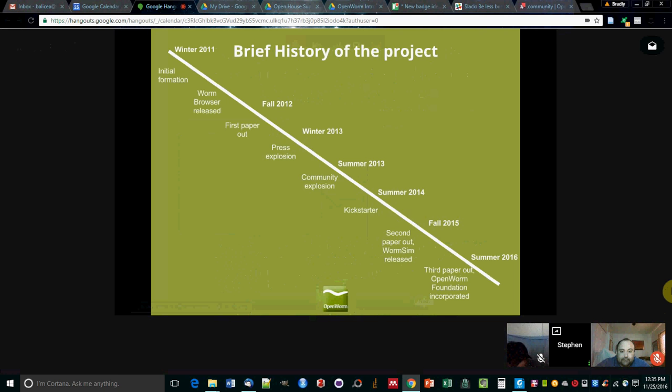People started blogging about us in 2013 and we really started building a larger community on social media. That led to in summer 2014, we did the Kickstarter. By fall 2015, we got another paper out and we released WormSim, which was the focus of our Kickstarter. And then in summer of 2016, we got a third paper out and we formed the OpenWorm Foundation and incorporated it. We've been operating in this new form with a bunch of committees that have been working on community efforts across many different areas.